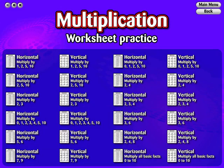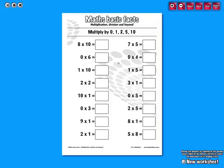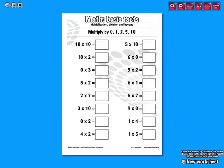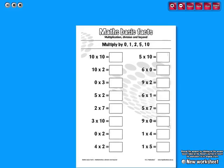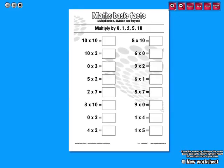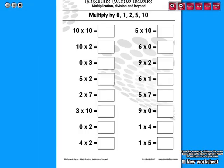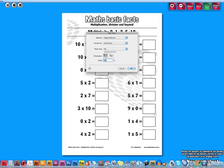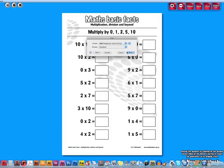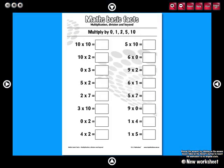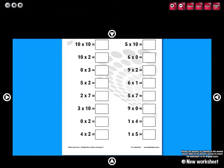A horizontal and vertical worksheet is available for each strategy. Answers are covered and can be revealed by clicking on the cover panel. Worksheets are randomly generated and give you the option of creating a new one at the click of a button. All worksheets can be moved around the screen, zoomed in and out, reverted back to their original state, printed, and you can use the sliders to focus on a part of the worksheet.